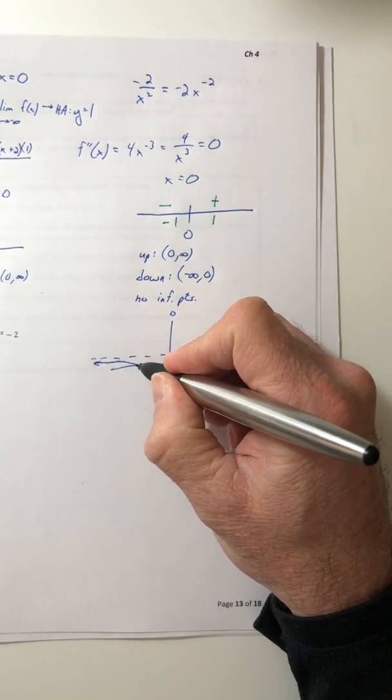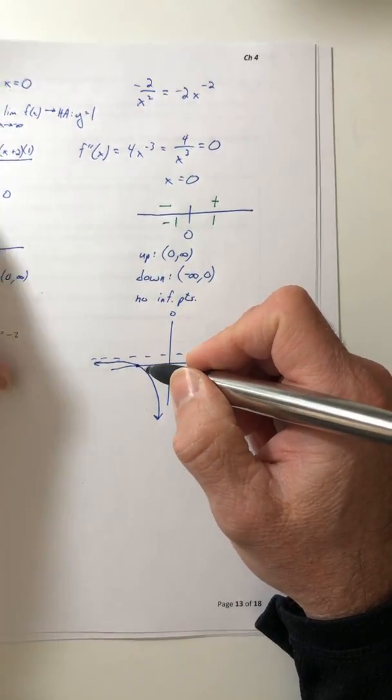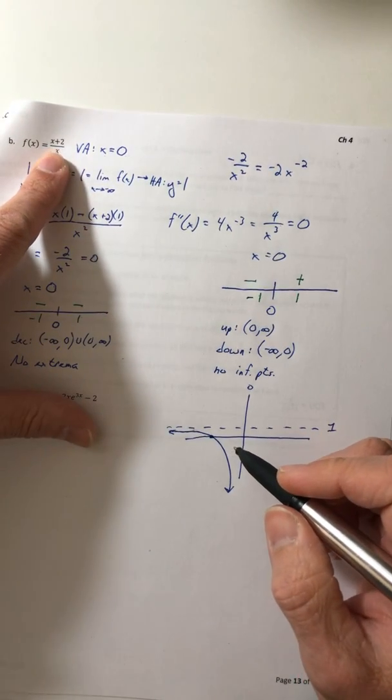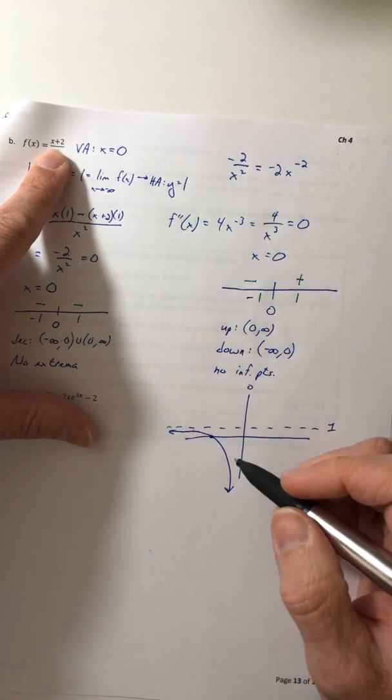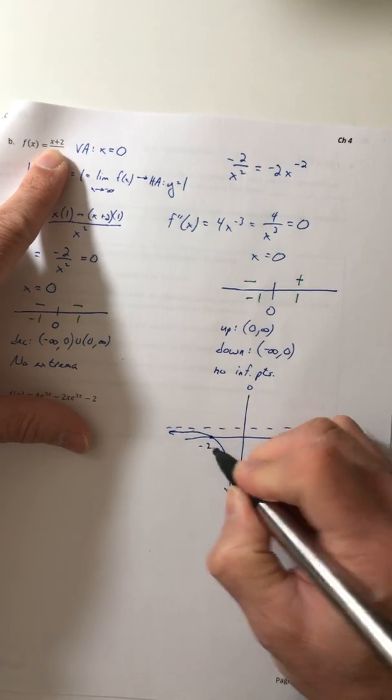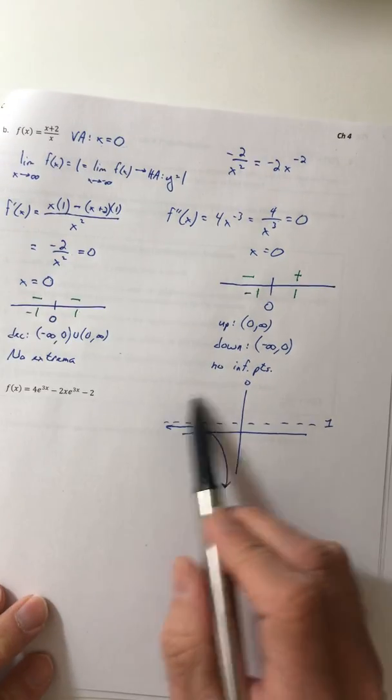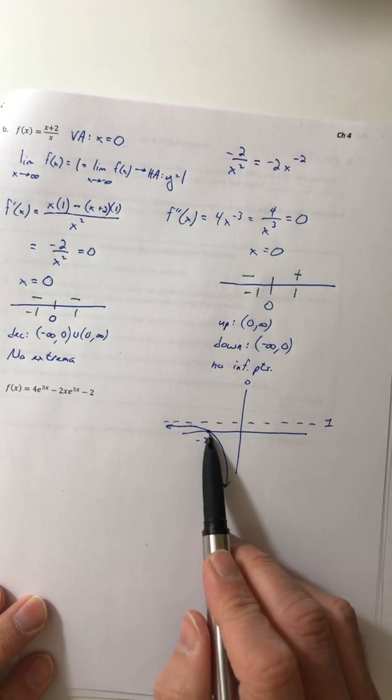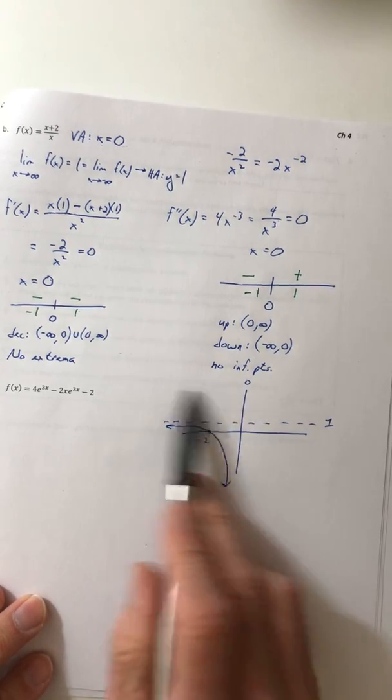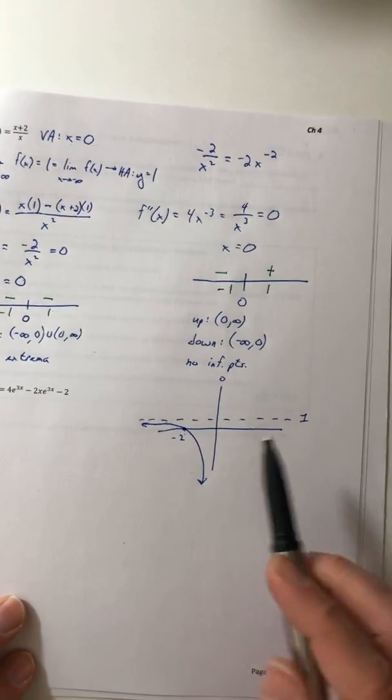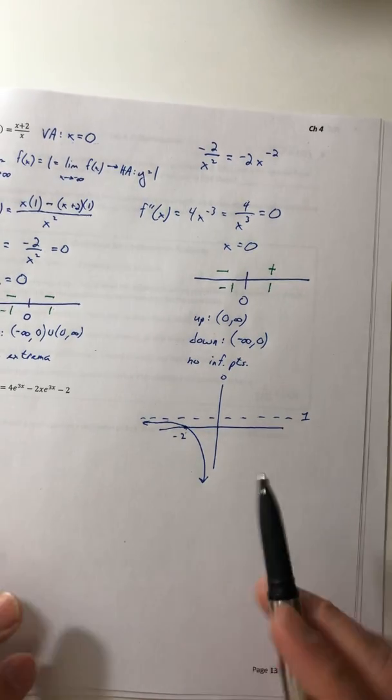Plus, it's got an x-intercept. If you set your function equal to zero, x equals negative two is an x-intercept. So it's got to cross it there. So it can't be up here. If it's going to hit the x-axis there, there's no way it can sit on top. Okay, so there's your first half.